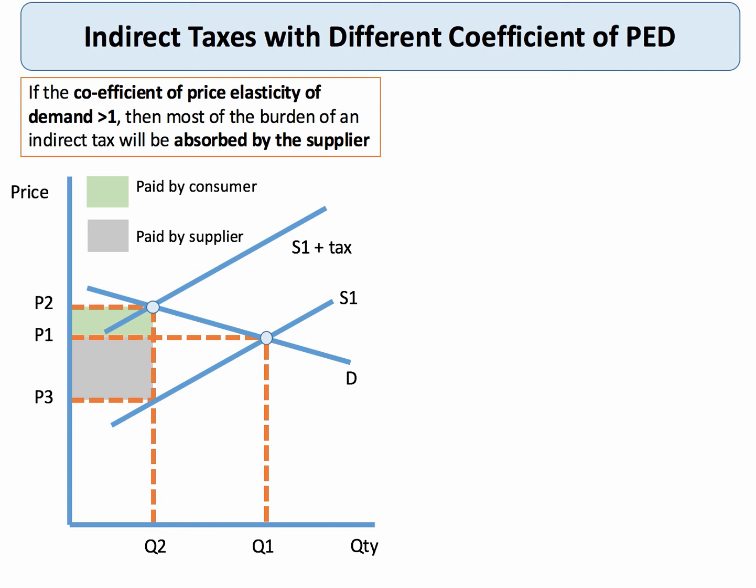So when the price elasticity of demand is greater than one — the coefficient is greater than one — most of the tax will be paid by the supplier.